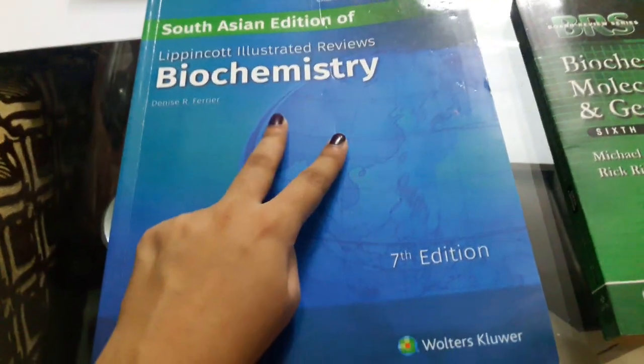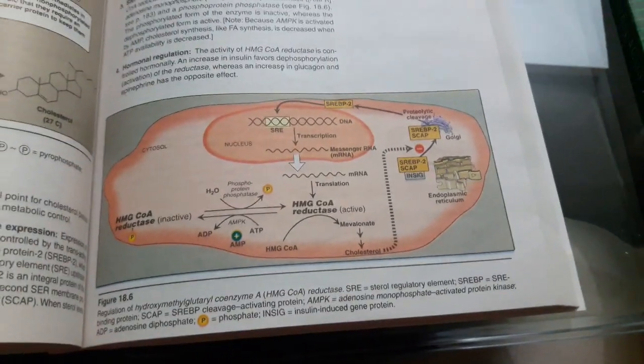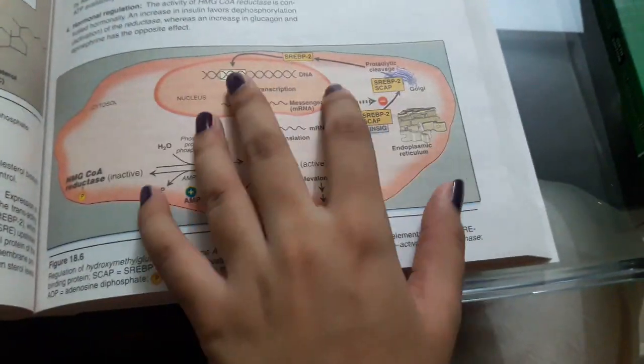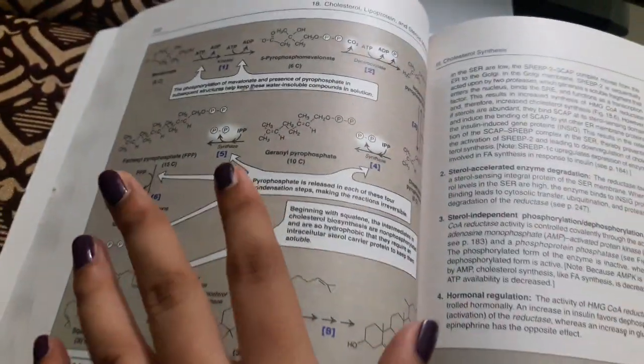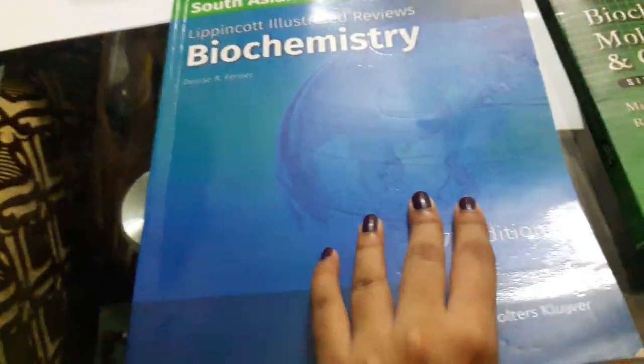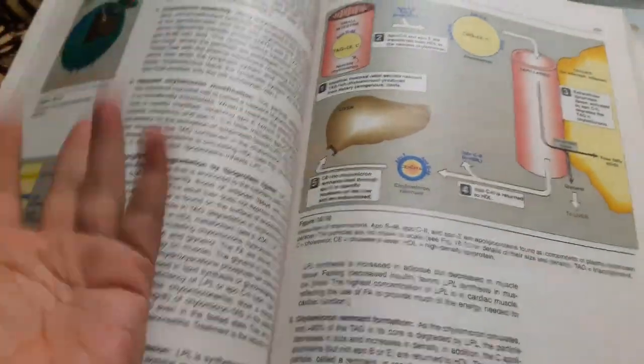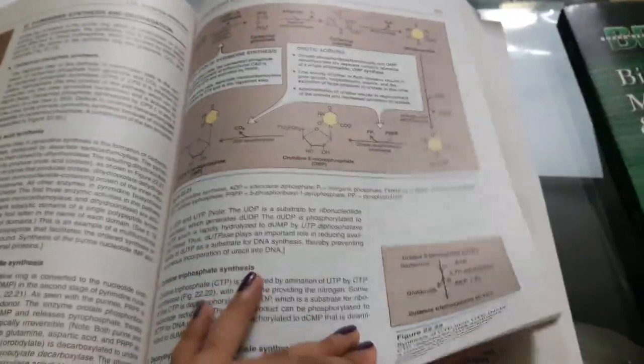The textbook that I recommend and that I personally use the most is called Lippincott Illustrated Reviews of Biochemistry. It is a South Asian edition, 7th edition. Lippincott is the best book for biochemistry for me. I loved it. It was very precise, very nicely written and as it is illustrated reviews, it has all these little figures and illustrations for every single topic.